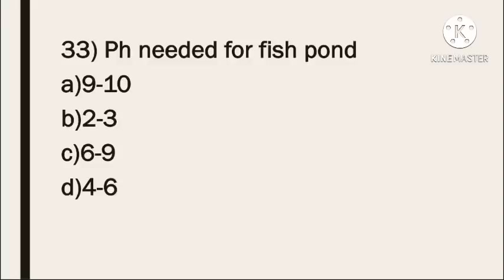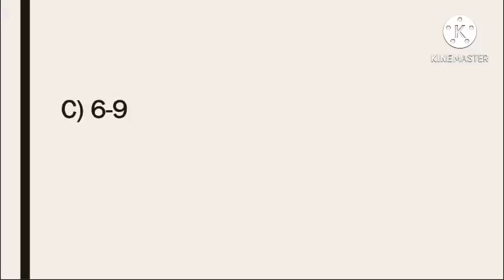Next question: what is the pH needed for a fish pond? Option A: 9 to 10. Option B: 2 to 3. Option C: 6 to 9. Option D: 4 to 6. The correct answer is 6 to 8 — that is the ideal pH for a fish pond.